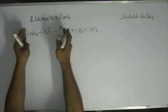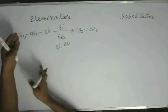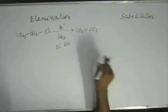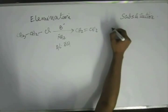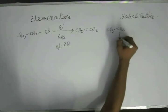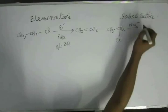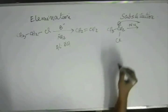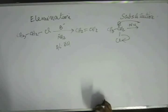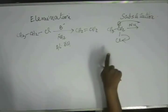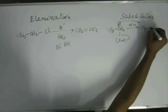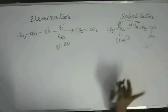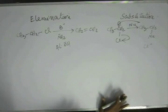We will study elimination separately — E1 and E2 both — as we did in the case of substitution. But for the time being, we understand this much: this is elimination. If we have substitution, then the same reagent will be termed as a nucleophile. That nucleophile will directly put its electrons into the anti-bonding orbital, and from the front side, chlorine takes away the electrons and comes out as Cl⁻. So what we have is substitution: Cl⁻ goes away and Nu⁻ gets in. That is substitution; this is elimination.